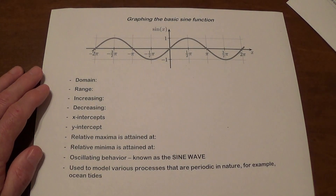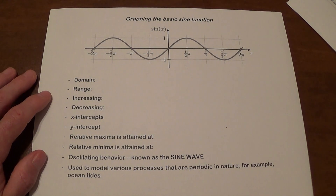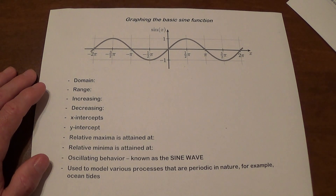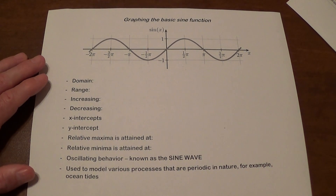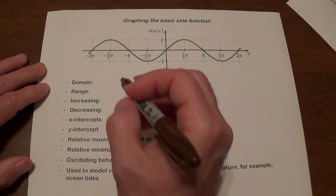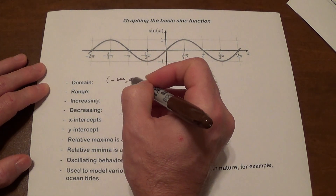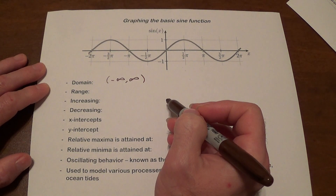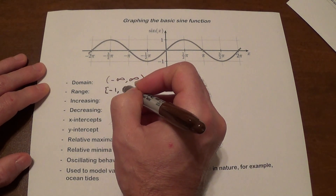So let's summarize this. This is what the graph looks like — it's a wave. The domain is going to be all real numbers. The graph of sine is going to oscillate between negative 1 and 1, so the range here is going to be just negative 1 to 1.